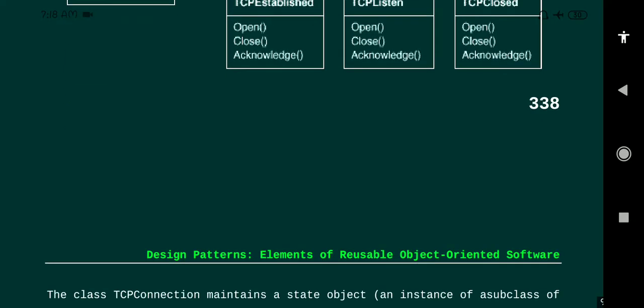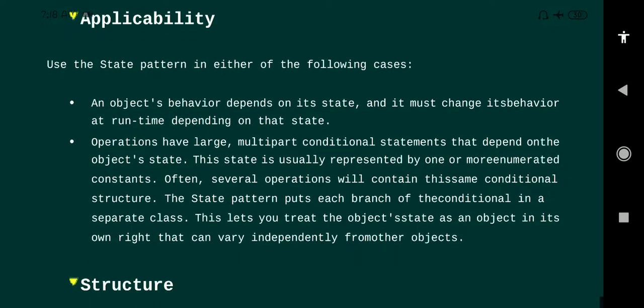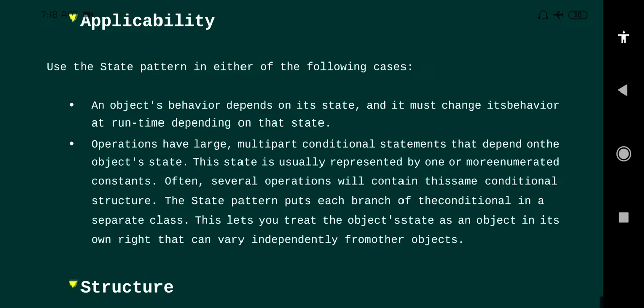The next topic is applicability — the scenarios where we use the State Design Pattern. We use it when an object's behavior depends upon its state and it must change its behavior at runtime. If the state changes, we can use the State Design Pattern. Also, whenever the operations are large and whenever we have multiple conditional statements, we can apply the State Design Pattern.